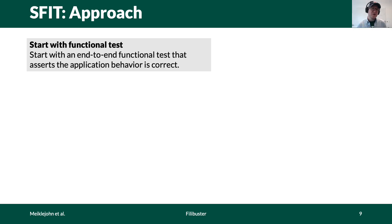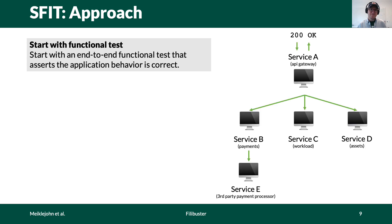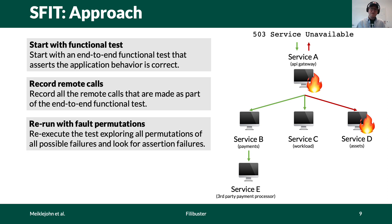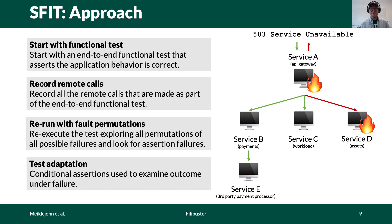Our approach works as follows. We start with an end-to-end functional test that asserts correct application behavior — for our ride-sharing service, this would be a request issued to the API gateway, communicating with all services, and a 200 successful response being returned. During that initial fault-free execution, we record all remote communication being made, and then we re-run the test over and over with all the different failure types and all permutations of those failures. For example, a fault injected at service D — a required service — causes A to return a 503 service unavailable response. Since the test only considers non-failure scenarios, developers must adapt their test to add conditional assertions about the desired behavior under fault.